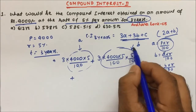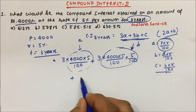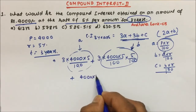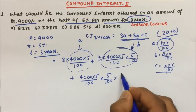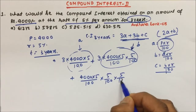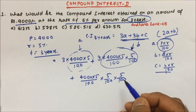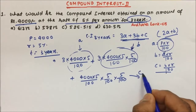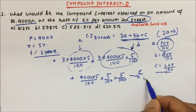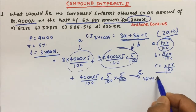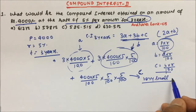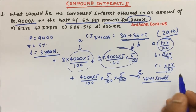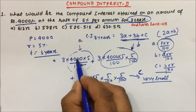c is equal to b into r by 100, which is 4000 into 5 by 100 into 5 by 100 into 5 by 100. One interesting thing: when you are calculating c, the value of c will be very small and you can simply ignore it if your answer option is very far from the others. Let's understand how we can ignore it.